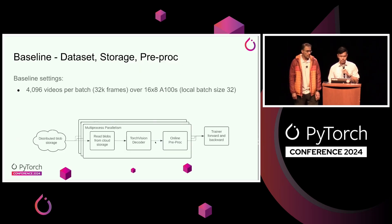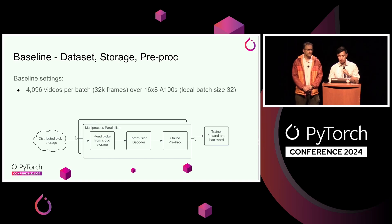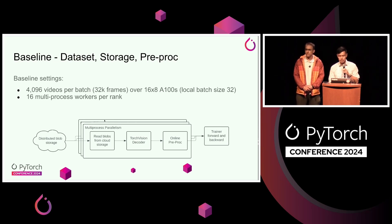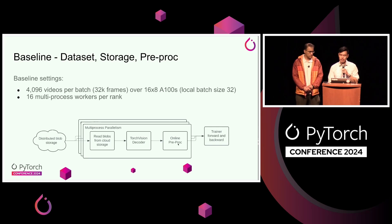For our baseline, videos are stored in distributed blob storage. We use the standard data loader to read a local batch size of 32, giving us 4,000 videos per batch. Sampling eight frames from each gives 32,000 frames per batch. We have 16 multiprocess workers using the standard Torch utils data loader for multiprocessing to parallelize data loading. Each process reads blobs from cloud storage, uses the TorchVision decoder to extract frames, applies light TorchVision transforms like cropping to 224x224 and random flips, then sends it over the IPC queue to the main trainer process, which does forward and backward.